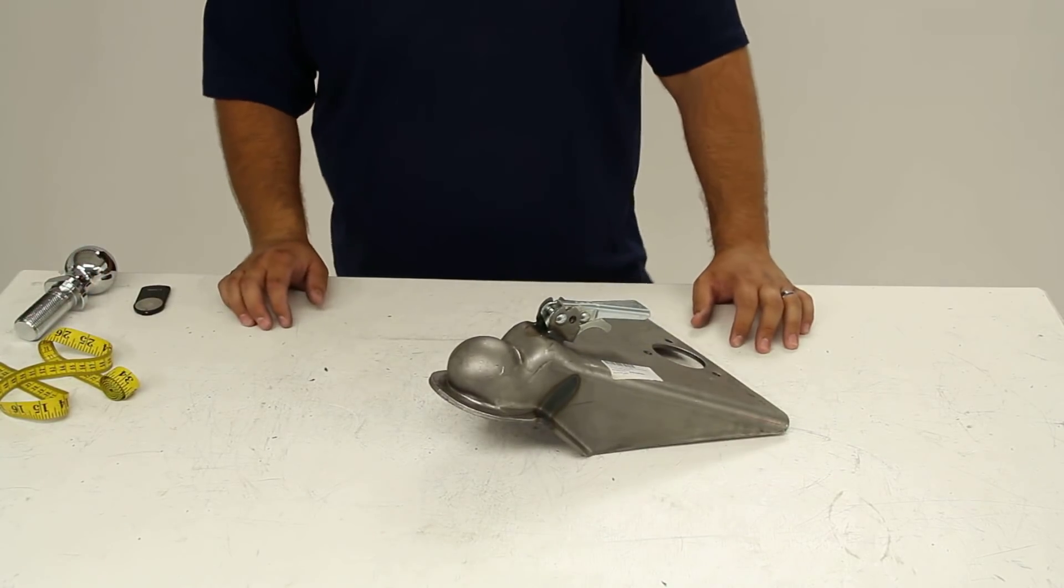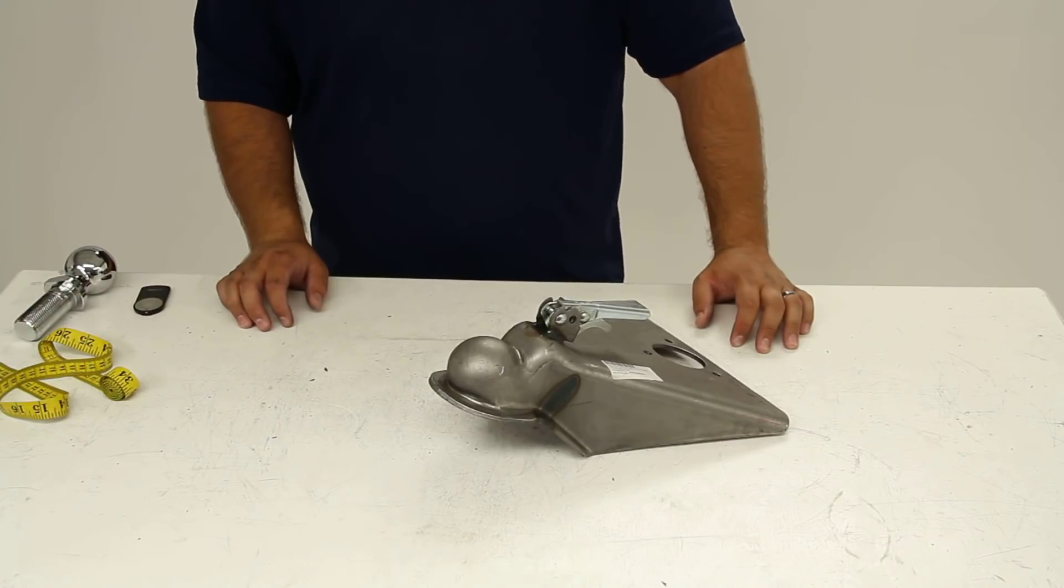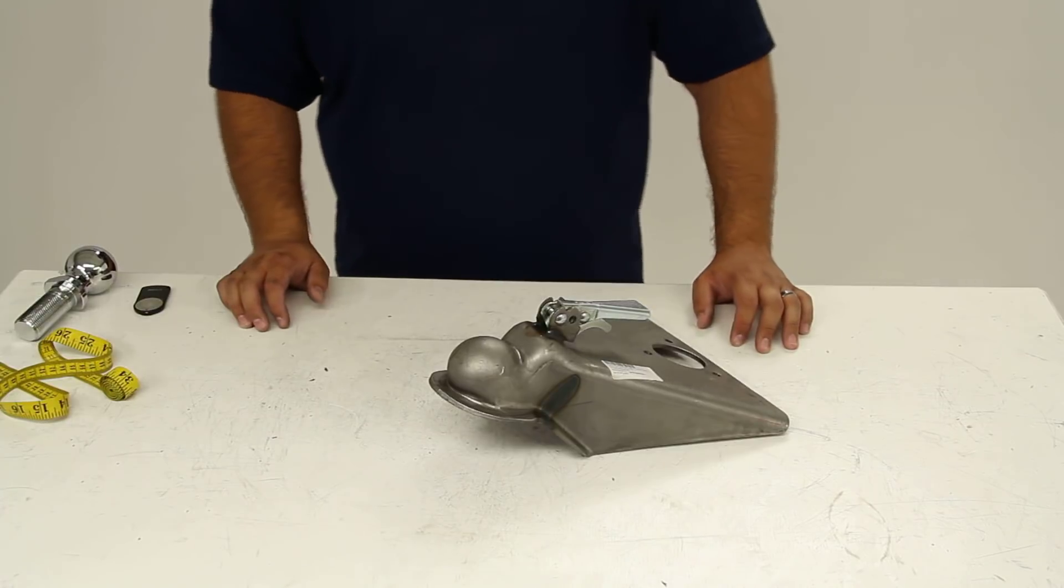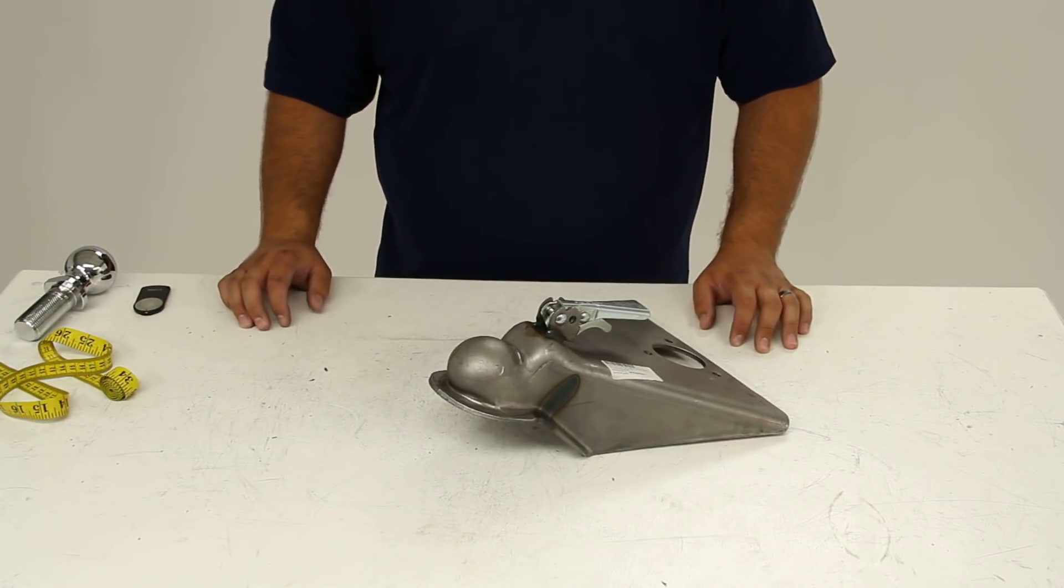And that's it for a quick look at the Fulton A-frame coupler for 2 and 5 sixteenths balls, part number F44305R0500.